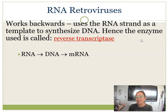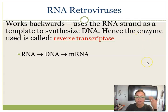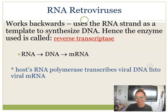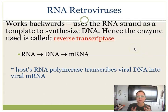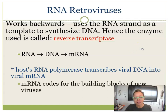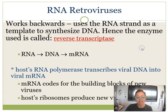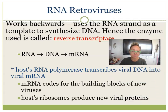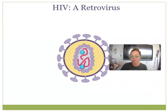It starts with RNA, synthesizes DNA, and then once there's a double strand of DNA, mRNA can be made with the directions to build new viral proteins. Once the viral DNA has been made, it will use the host's RNA polymerase, ribosomes, etc. to build new viral proteins.